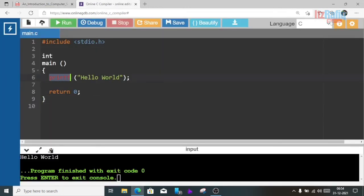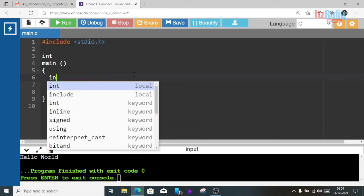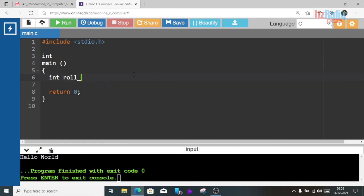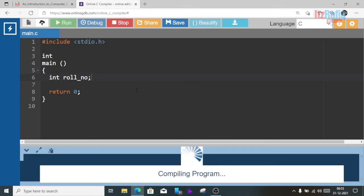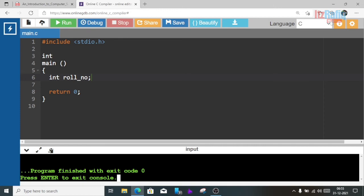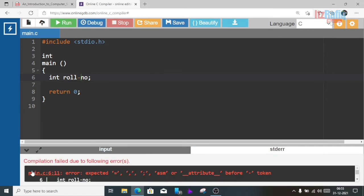Now let's have an example. Suppose I am defining an identifier int role_number equal to 2, then semicolon. I am declaring one variable integer role number. Now let's run the program. As I don't have a printf statement, I will not get any output. Now remove the underscore and put a dash symbol between role and number. Now run. You can see compilation fails due to following errors: expected equal, comma, semicolon before dash token. The mistake is on line number 6.